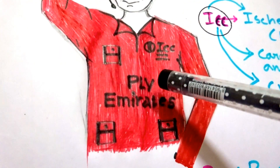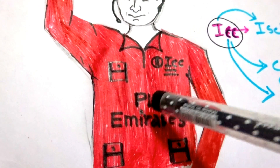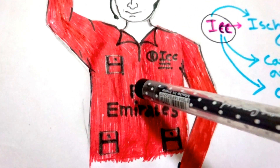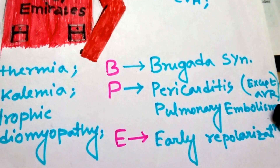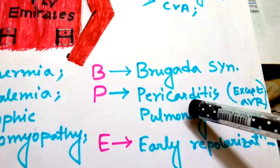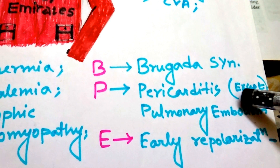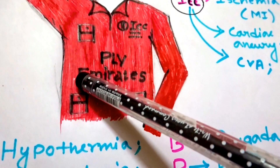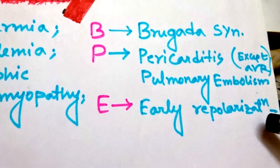In his t-shirt it is written 'ply amulets' in place of 'fly amulets.' By P, there are two conditions: pericarditis and pulmonary embolism. In pericarditis, the ST segment is elevated in all leads except AVR. By E — amulets — we get early repolarization.